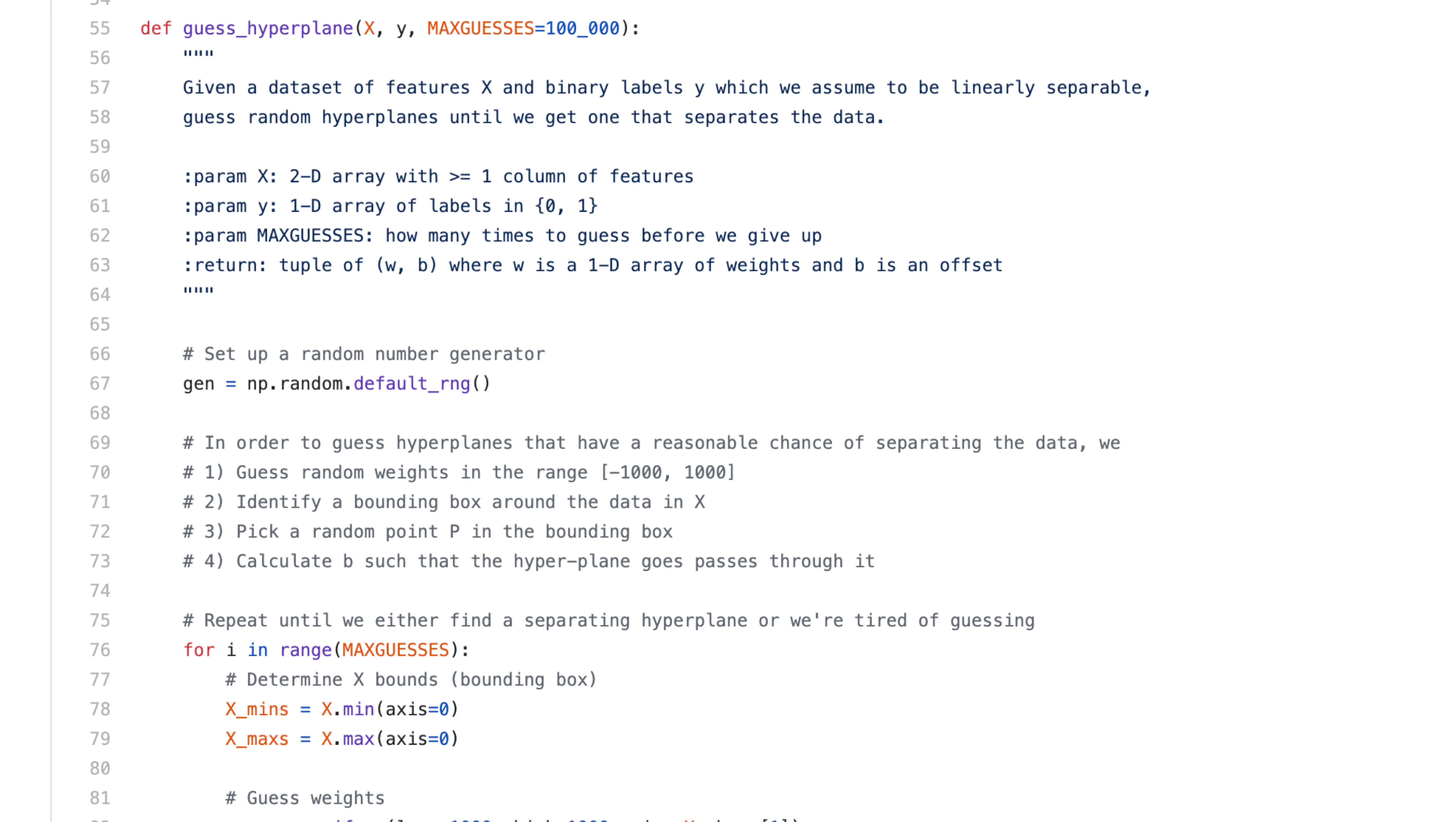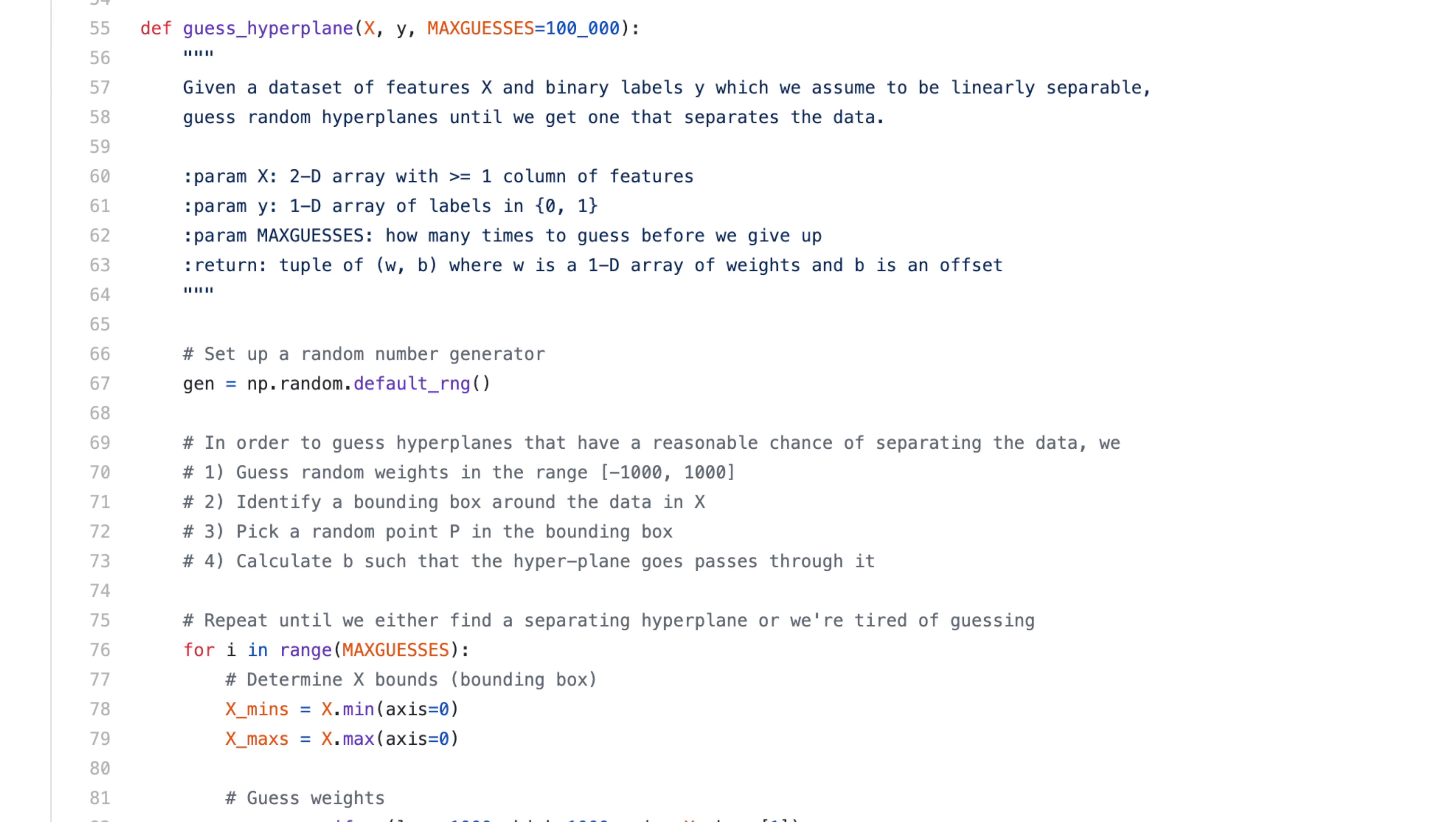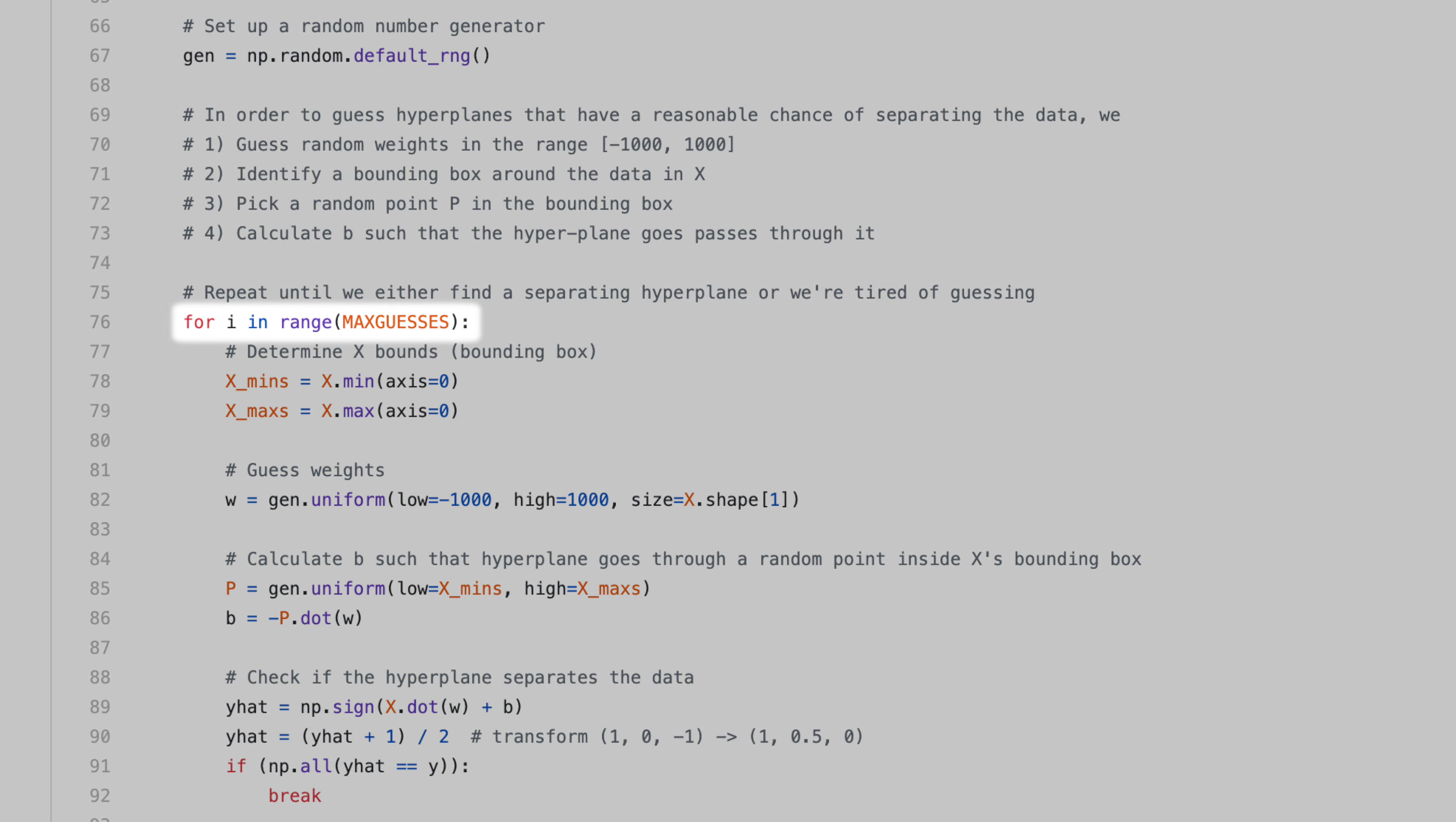So, here's my code. I start by creating a numpy random generator. If you're not familiar with this, check out my lecture on random number generation with numpy. Then I set up a for loop to do max guesses iterations. Next, I determine the bounding box of the data by getting the min and max value of every feature dimension. Then I randomly guess weights between negative 1000 and positive 1000, which is somewhat arbitrary, but that's fine for now. Next, I pick a random point, p, in the bounding box, and calculate b such that my hyperplane goes through p.